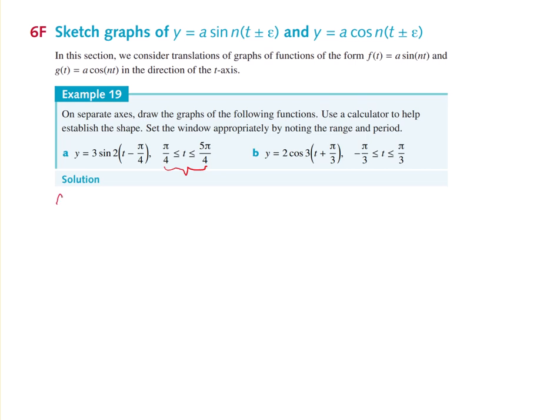So start with the amplitude. The amplitude is equal to, well, that's the number that's in front. So the amplitude is equal to 3. Remember, amplitudes can only be positive. Your period is 2π on n, and in this case, n is 2. So 2π on 2, which equals π.